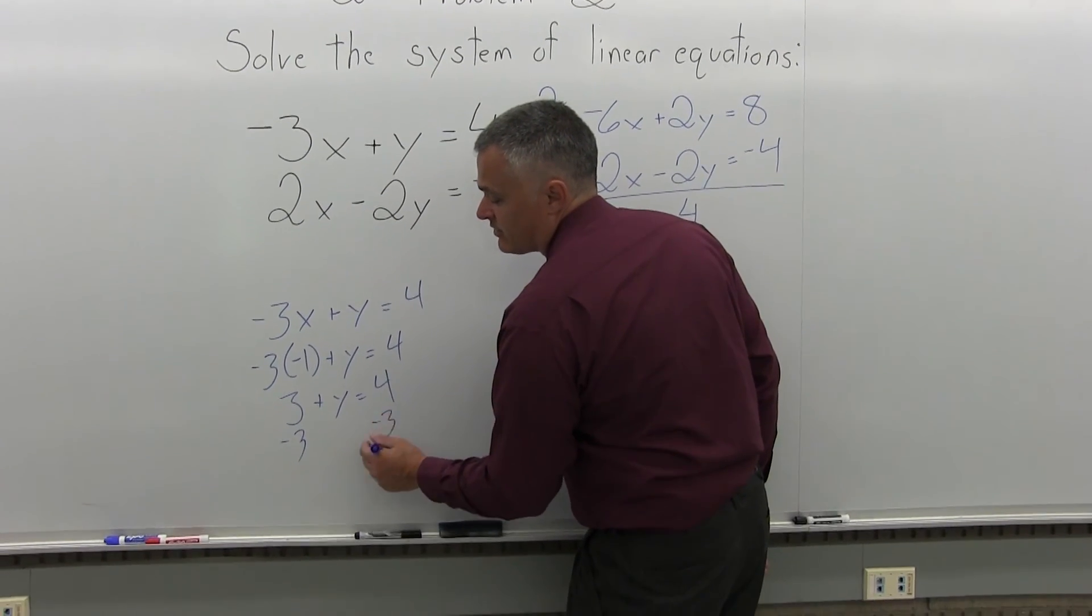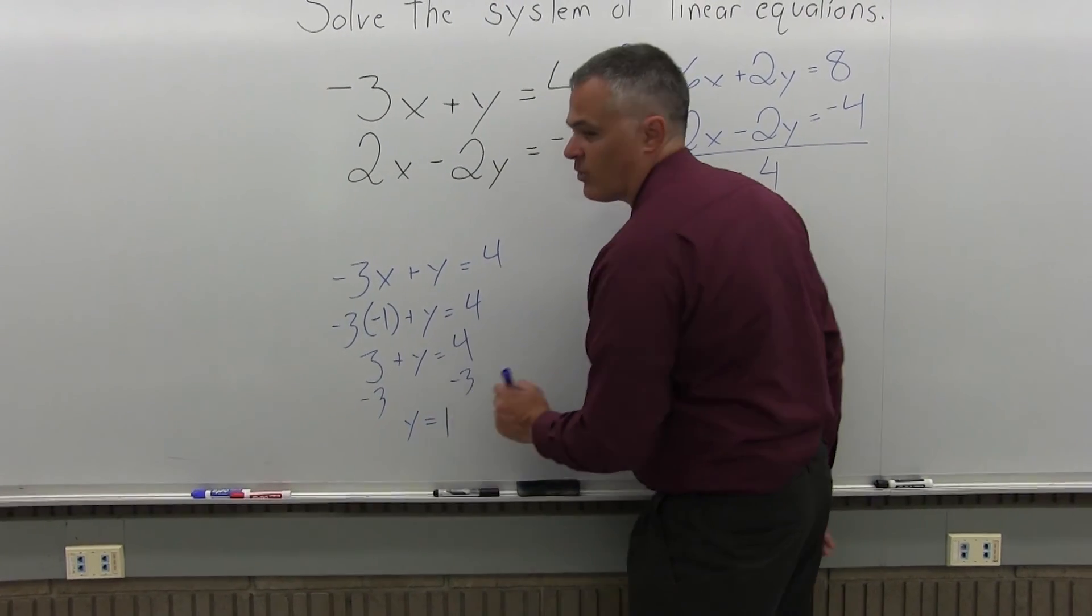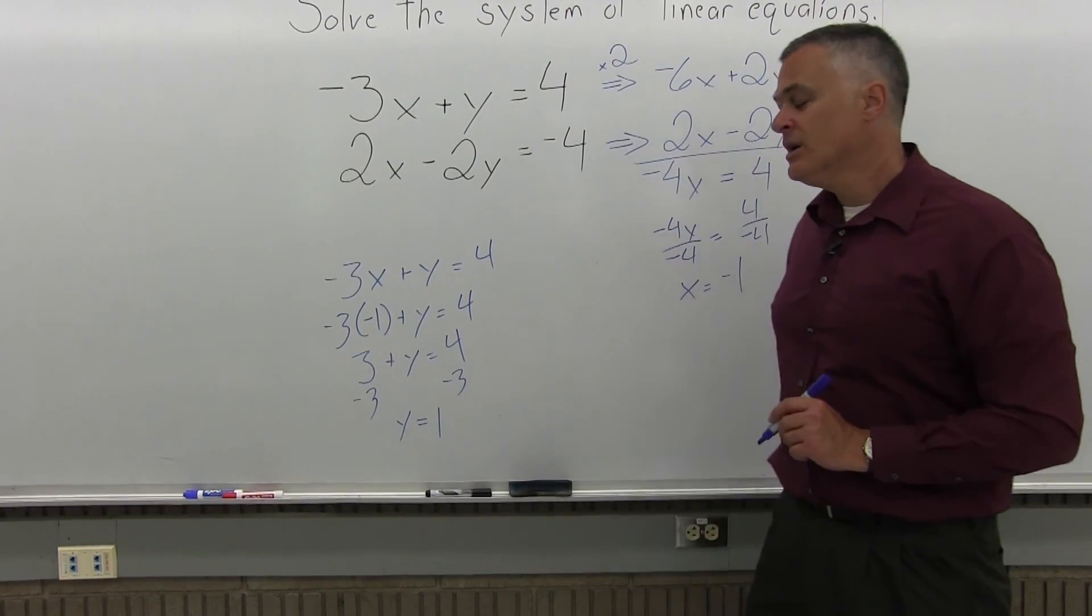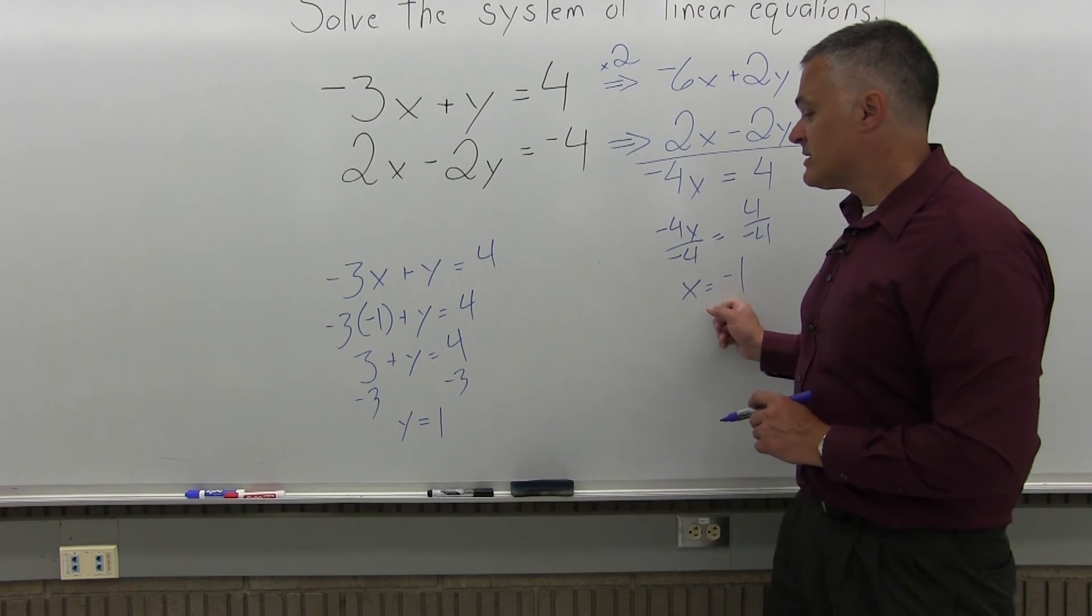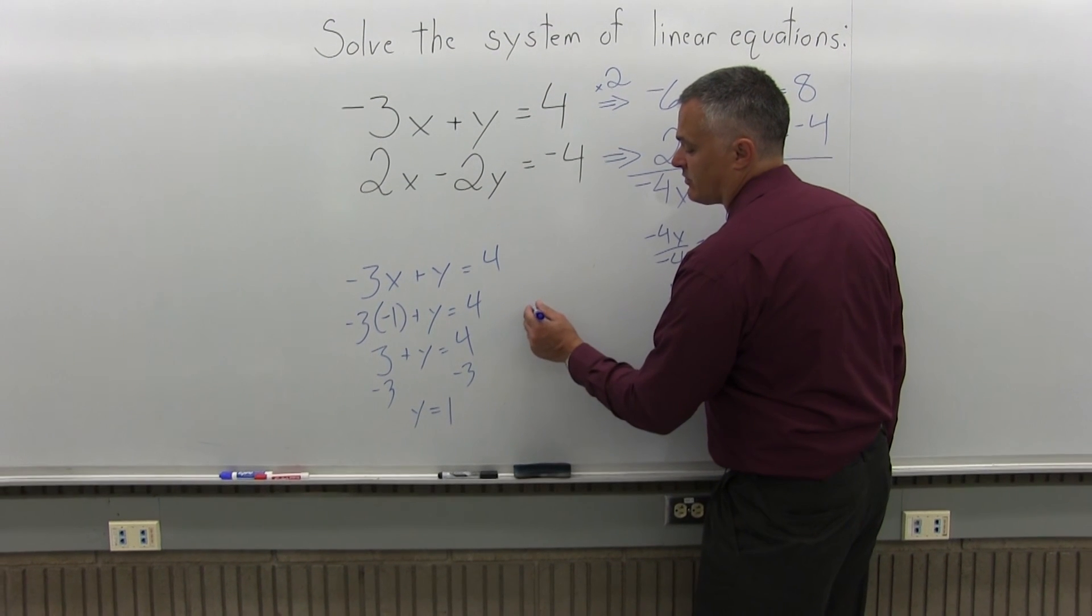But you can finish it to the end. Do negative 3 on both sides of the equation and you'll get y equals 1, positive 1. So now we have a value for x and we have a value for y. So that's the solution. x is negative 1, y is positive 1.